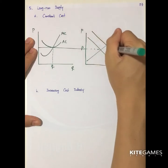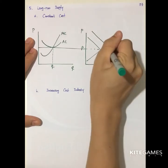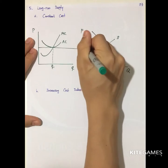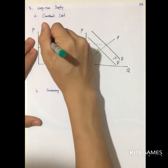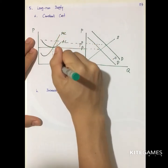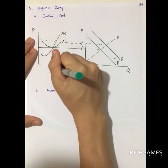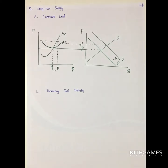If the demand curve increases and shifts to the right, the price level will increase. The firm will experience a short-term profit and raise output to Q2. Given this, more firms will come to the market.